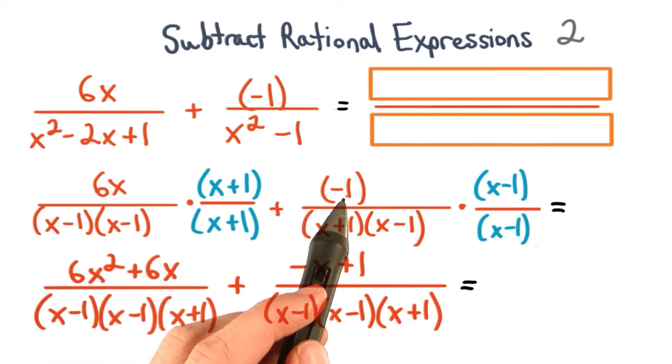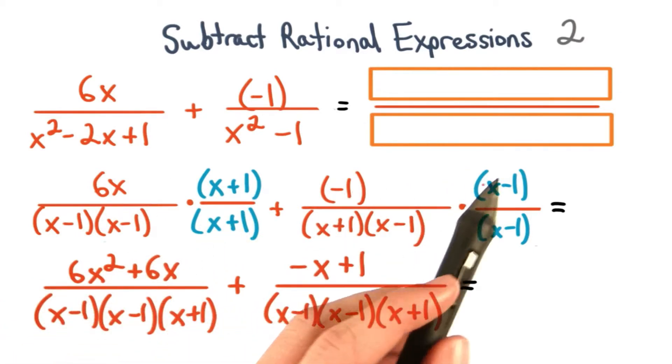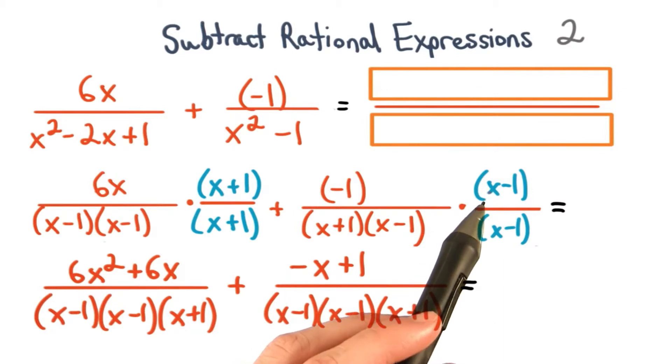For the second fraction, we'll have negative 1 times the quantity x minus 1. We really just change these two signs, so we'll have negative x plus 1.